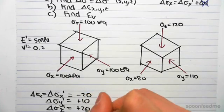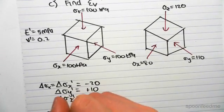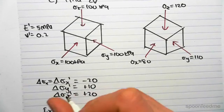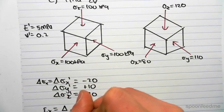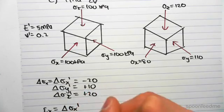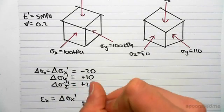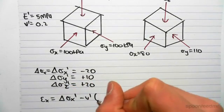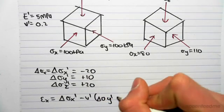So now it's very easy for us to find our strains. We know that the strain in the x direction, for a drained example, is the change of stress in σx' minus ν' times the change of σy'.